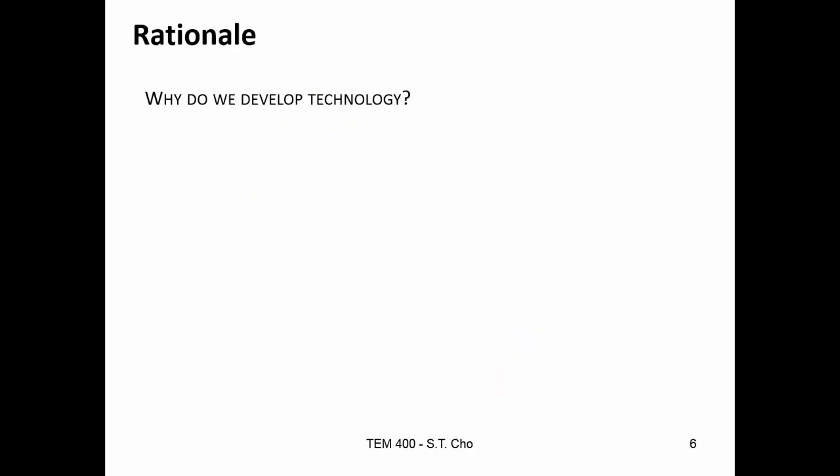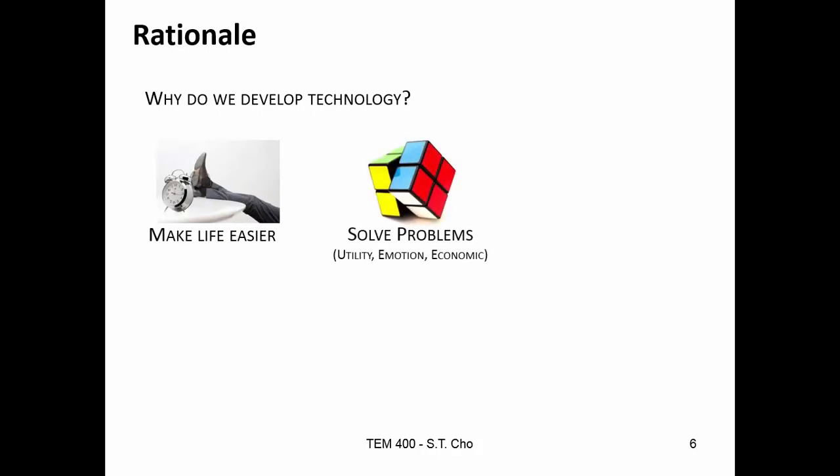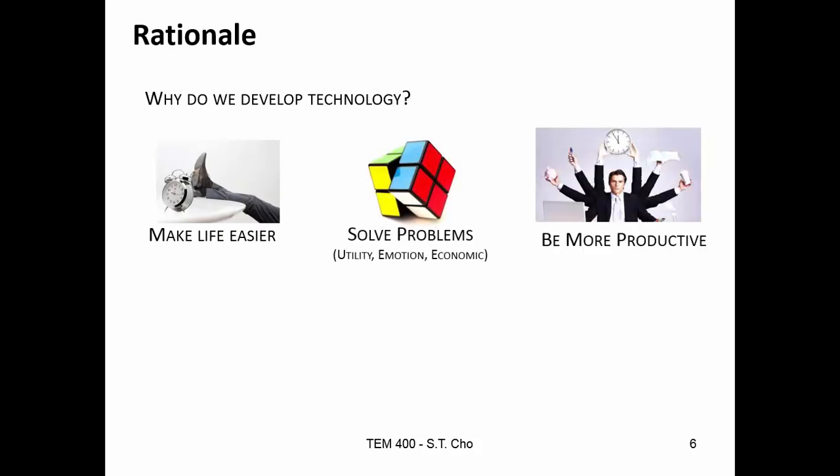Why do we develop technology? When you sit down and think about it, the reason why we develop technology is we want more of us. We want to go faster — faster than what our legs can do. We want to be stronger, lift more things. And with computing, the brain, all of a sudden we can duplicate a thousand of you to do the same thing.